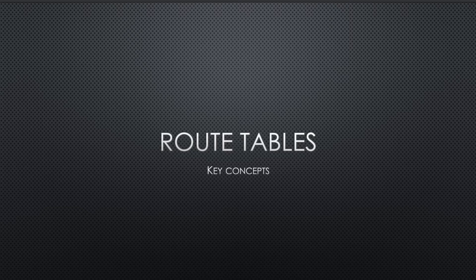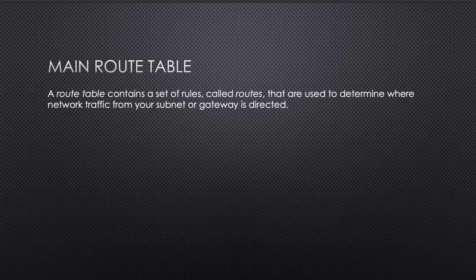In this video, we will talk about AWS route tables. A route table contains a set of rules called routes that are used to determine where network traffic from your subnet or gateway is directed.